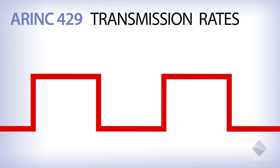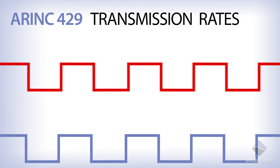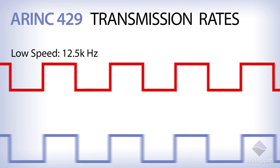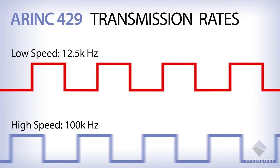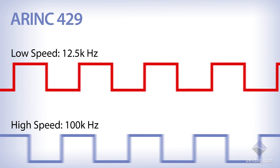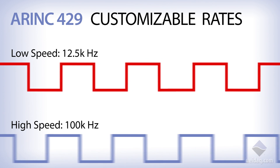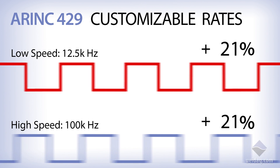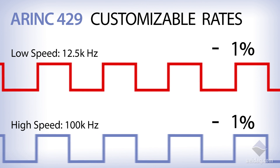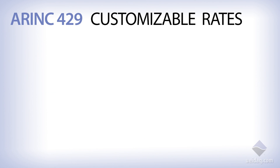Typically, ARINC 429 allows for two standard transmission rates: one at 12.5 kHz and the other at 100 kHz. Based on customer requirements, UEI has added the ability for you to adjust the transmission rates.